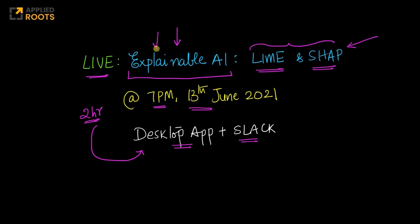Explainable AI is becoming more and more important as the complexity of advanced deep learning models is increasing every day, so we have to be able to understand what's happening within a model.